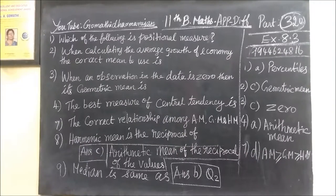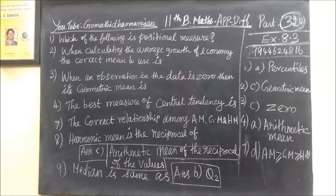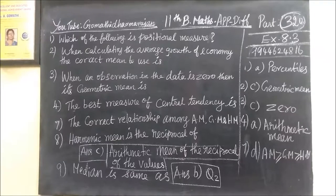The correct relationship among arithmetic mean, geometric mean and harmonic mean, that is the answer. Yes, the seventh one is the same. Arithmetic mean greater than or equal to geometric mean, greater than or equal to harmonic mean. That is the answer.